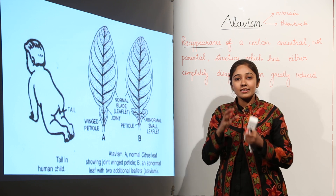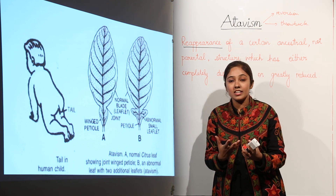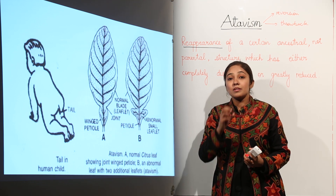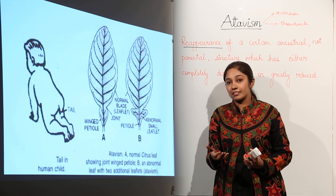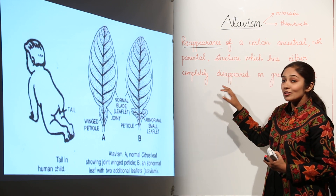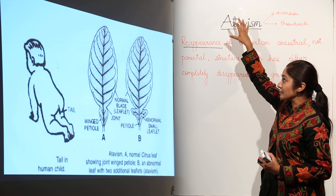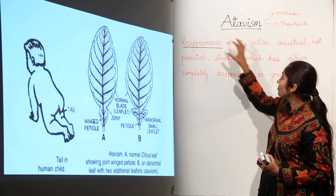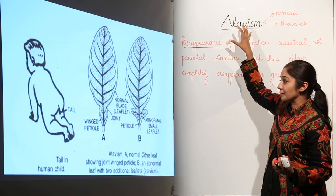Now why does this happen? Scientists think that organisms have a tendency to depict some ancestral characters even after they have disappeared. So this tendency — the reappearance of ancestral characters — is what we call atavism.